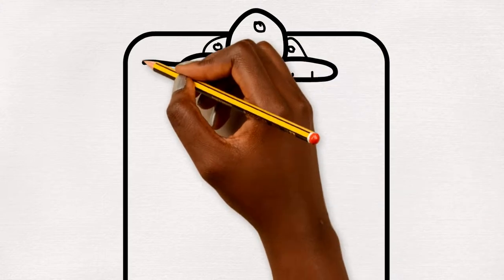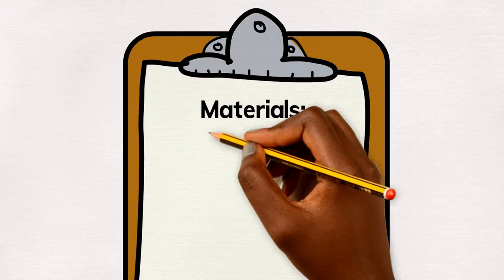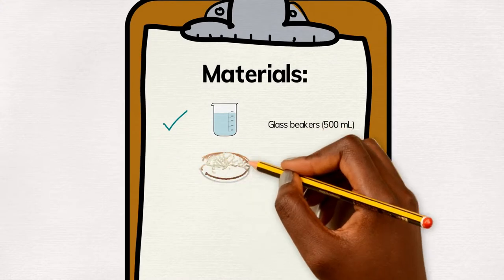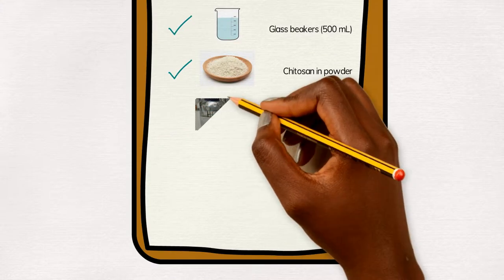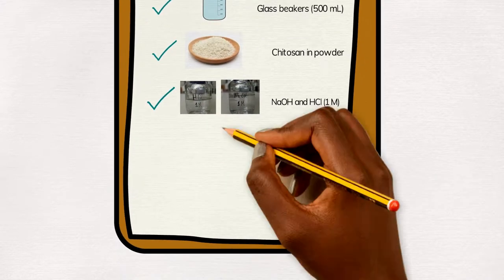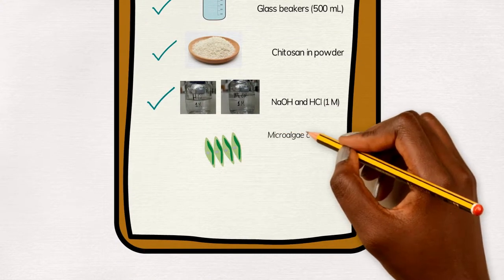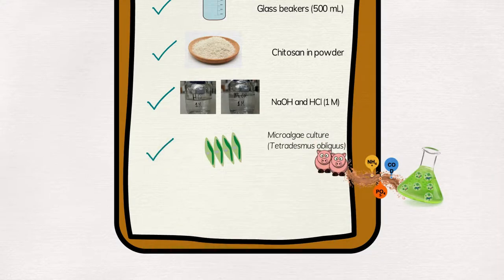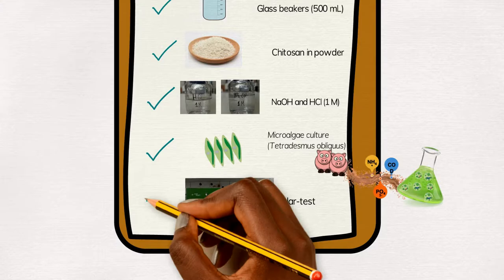So let's start! For this method we will need glass beakers that can fill 500ml, the chitosan stock, sodium hydroxide and hydrochloric acid at 1 molar concentration, the microalgae culture. In this method we use tetradesmus obliquus grown in piggery wastewater and of course the JAR test.